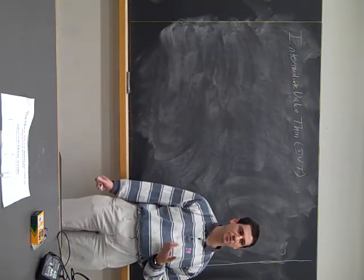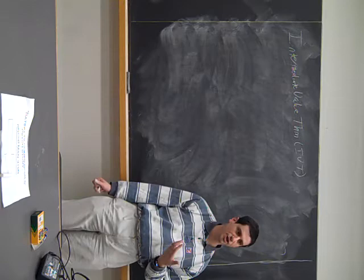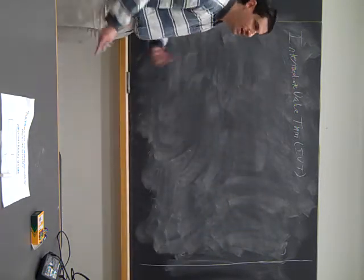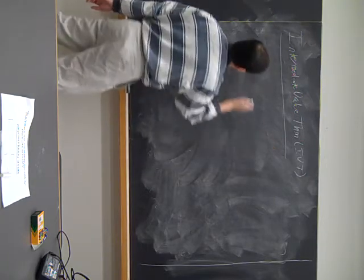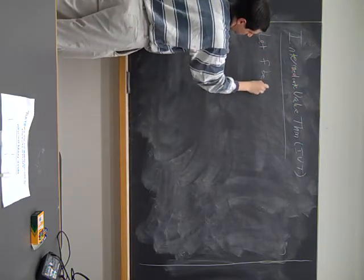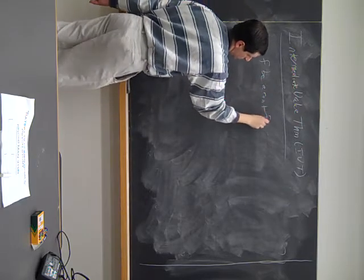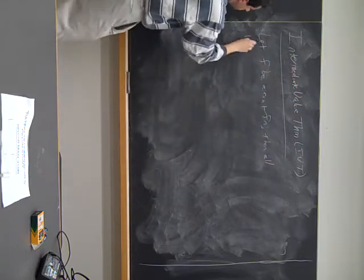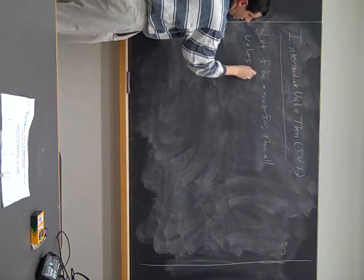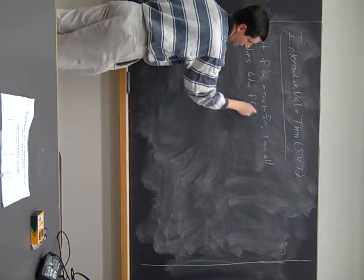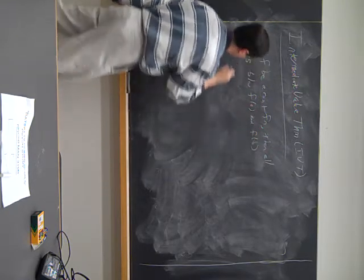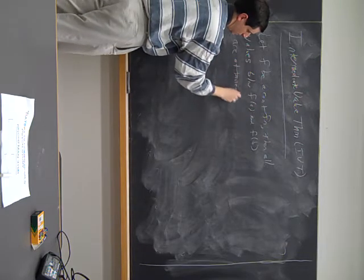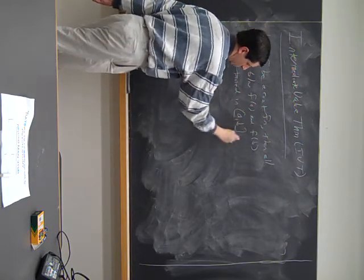The other thing is the intermediate value theorem and the mean value theorem, one of its consequences, are incredibly powerful. And so I want to just emphasize a little bit what we can get from these. So this is the following: let F be a continuous function, then all values between F of A and F of B are attained in the interval AB.